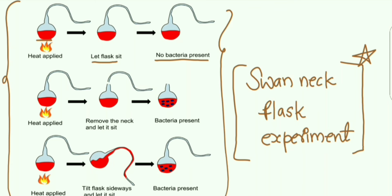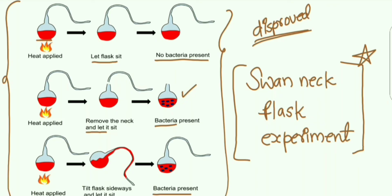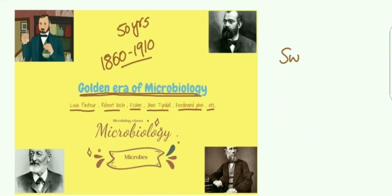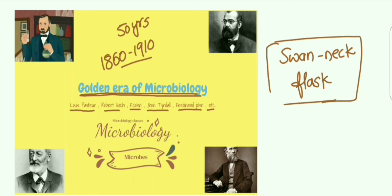Pasteur also removed the neck of the flask and let it sit, and observed bacteria in the flask. He repeated the same procedure and again observed bacteria in the flask. Through this experiment, he disproved the theory of spontaneous generation. This is the swan-neck flask experiment of Louis Pasteur.